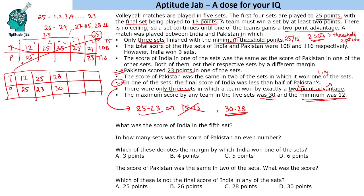If Pakistan scores 30, India scores 28. Pakistan has won 2 sets and India has won 1 so far, so India needs to win both remaining sets. The running totals are: India 40, needing 43 more points; Pakistan 65, needing 38 more. India must win both remaining matches, winning one by 2 points and another by 3 points to account for the total difference of 5 points.